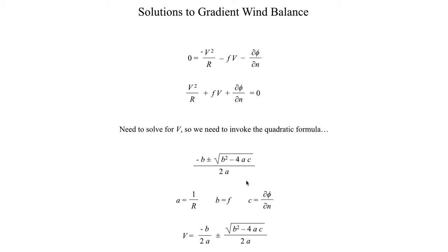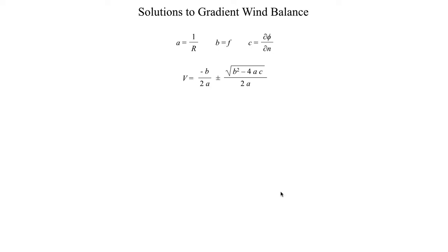I'm going to actually separate the numerator of the quadratic equation here, and this makes the math a little bit easier. I get minus B over 2A plus or minus square root of this term right here, the discriminant, square root of the discriminant divided by 2A, just separating the numerator of this fraction.